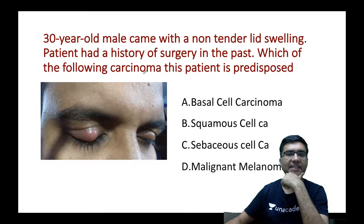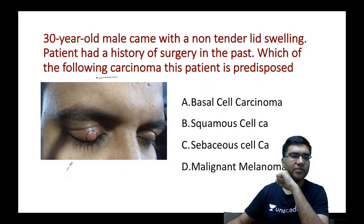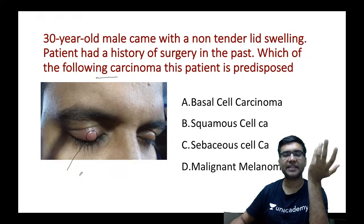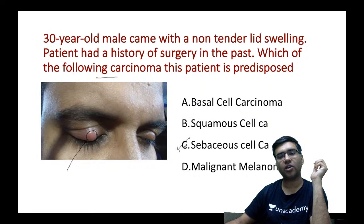This patient has a recurrent chalazion — a non-tender swelling at the level of the upper lid. Whenever you have a recurrent chalazion, the patient may be suffering from sebaceous cell carcinoma. Remember, sebaceous cell carcinoma is the most common carcinoma occurring in the upper lid.